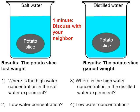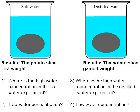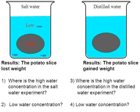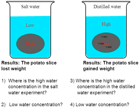Let's look at the salt water potato first. Where is the high concentration? In my animation, water moves from a high concentration to a low concentration, so water must be exiting this potato slice. There's a high water concentration in the potato and a low water concentration in the salt solution outside — that's why it lost weight. On the other side, the potato in distilled water got heavier because it absorbed water. The high concentration was on the outside of the potato and the low concentration was on the inside, so water moved from high to low — that's why it got heavier.